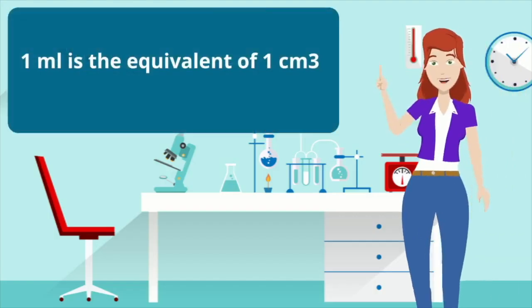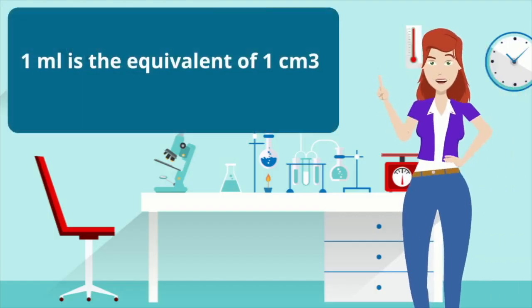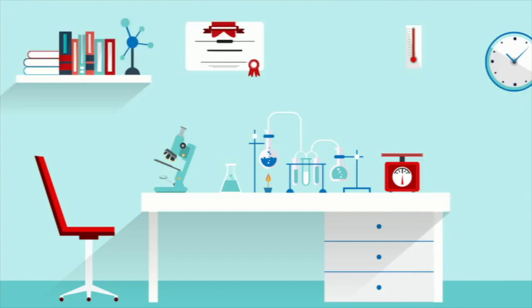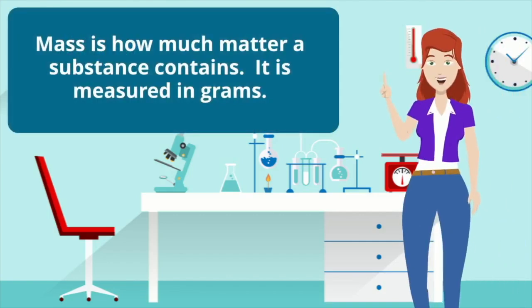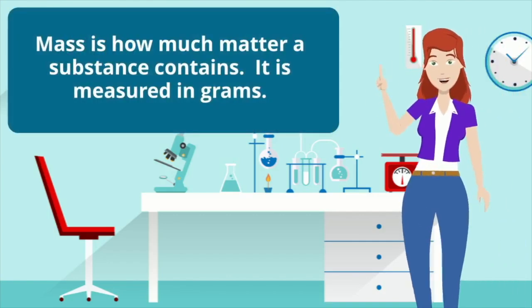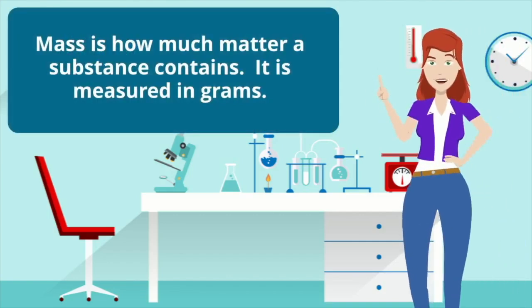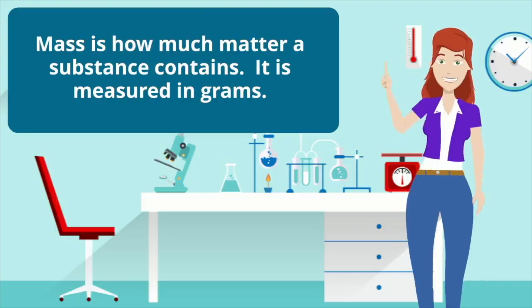1 milliliter is the equivalent of 1 cm cubed. Mass is how much matter a substance contains. It is measured in grams.